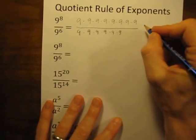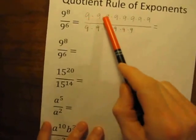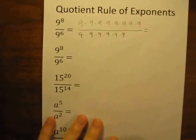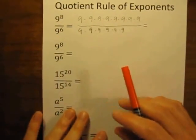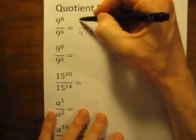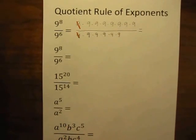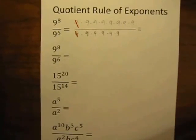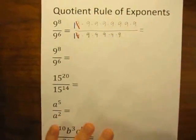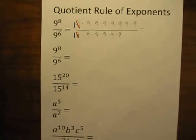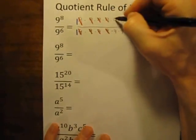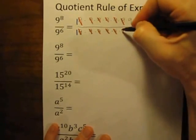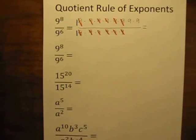Now that we have this written out in expanded form, we've got multiplication on the top and division on the bottom. What we can do now is see that we have 9 divided by 9 on each pair. What is 9 divided by 9? If we cancel — if we do that division — 9 divided by 9 is simply equal to 1. It cancels itself out. So each pair of 9 divided by 9 cancels out.